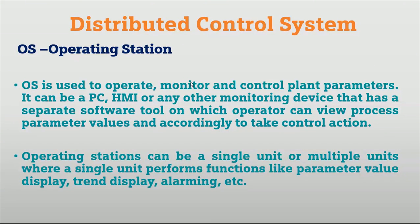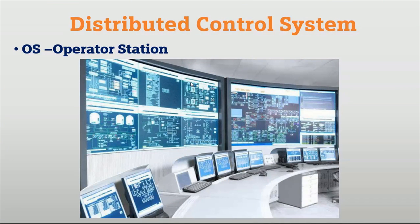The second important element is the operating station. The operating station is used to operate and monitor the control plant parameters. It can be a PC, HMI, or any other monitoring device with a separate software tool that operates and views process parameters and takes control actions. An OS station can be a single unit or multiple units that perform functions like parameter display, trend display, alarm management, and process control with real-time applications. Different stations can be placed and from the stations we can monitor in real-time, with graphical representation for the process, trend alarms, and process parameters.